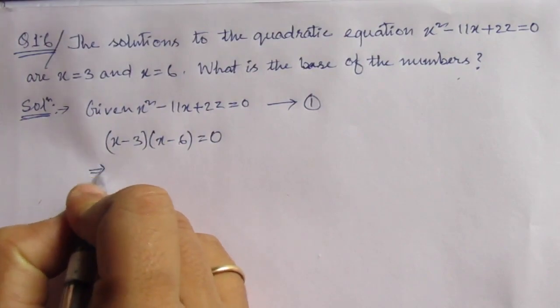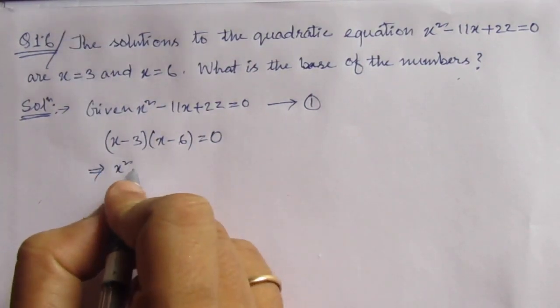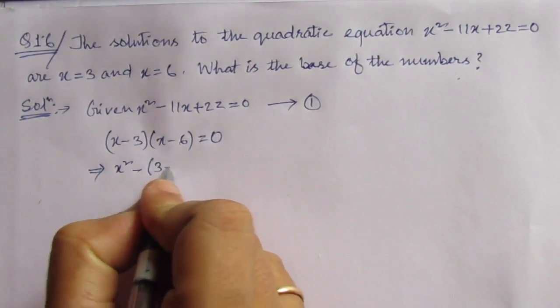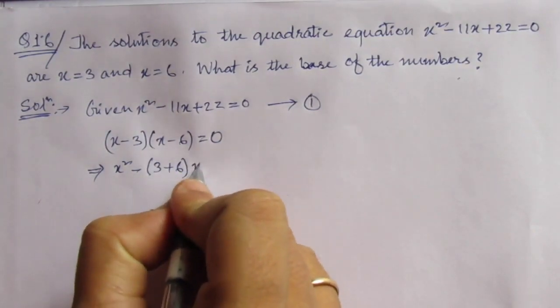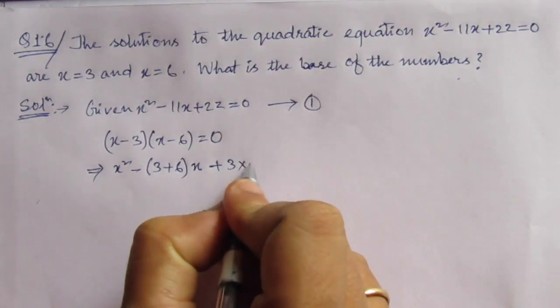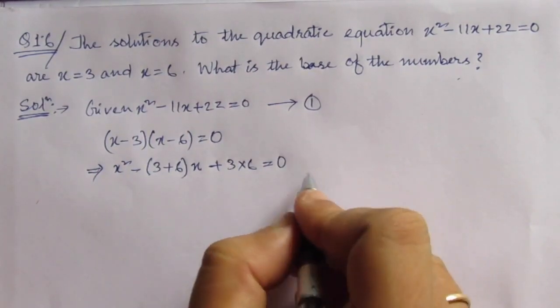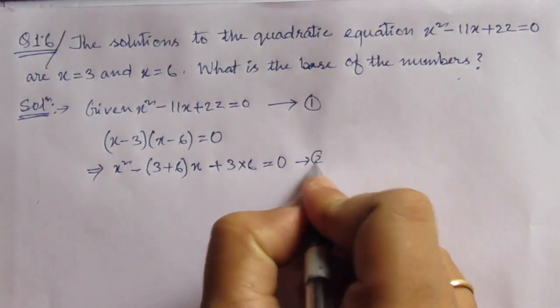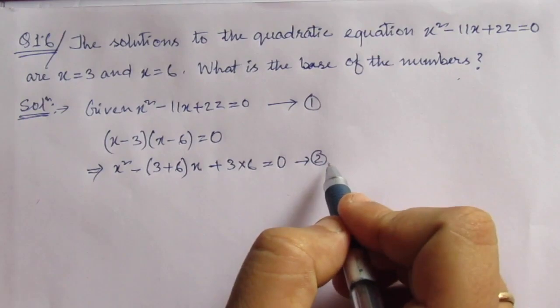If we expand this, what will we get? x square minus 3 plus 6 into x plus 3 into 6 equal to 0. So this is equation number 2. If we compare equation 1 and 2: